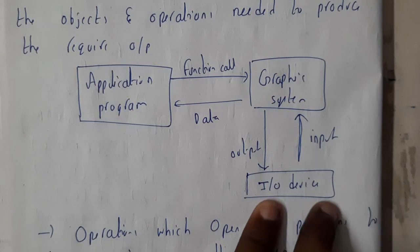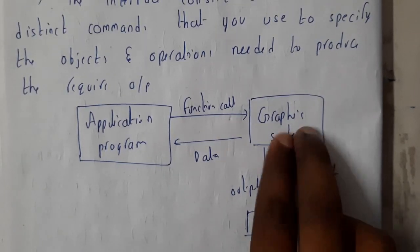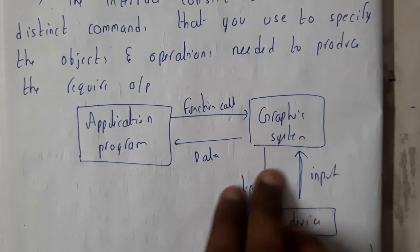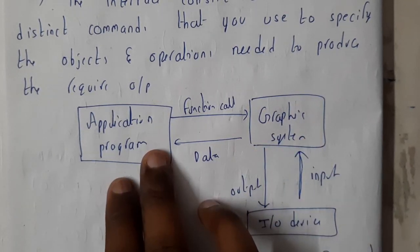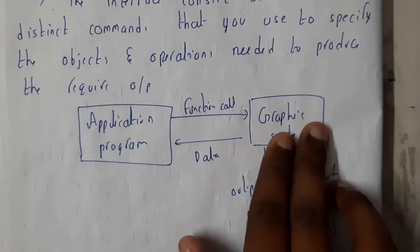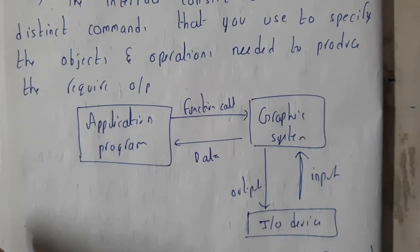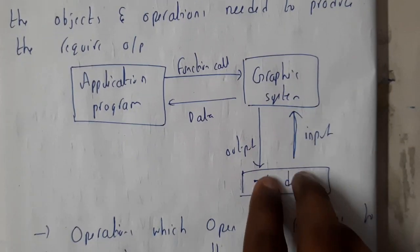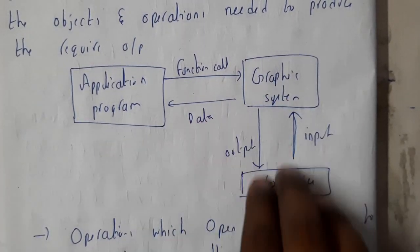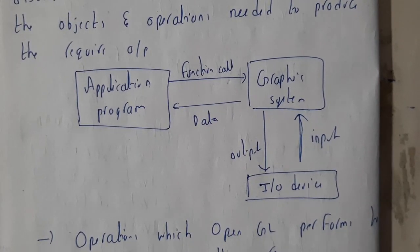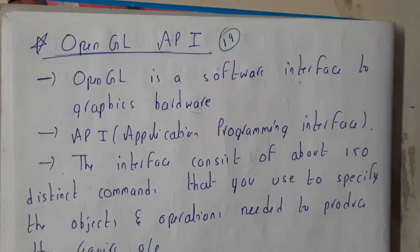We'll be using input/output devices to send our requirements to the graphical system. The graphical system interacts with the application program, and the application program returns to the graphical system. The graphical system then gives you the output. This is a cyclic process in which you display images or any kind of objects onto your screen.